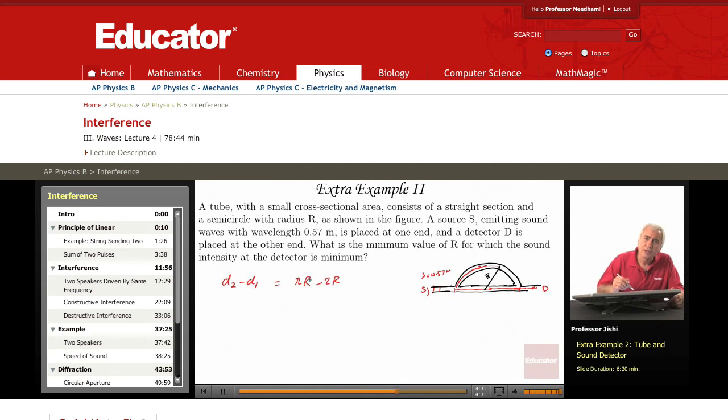Now this path difference, if it's equal to lambda over 2, I get destructive interference. Or if it's equal to 3 lambda over 2, I get destructive interference, or 5 lambda over 2, I get destructive interference.